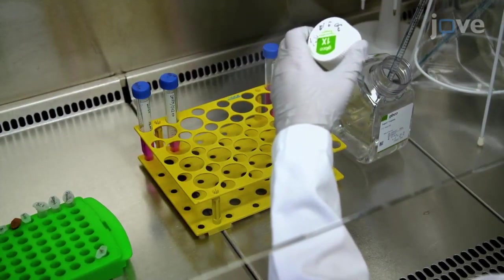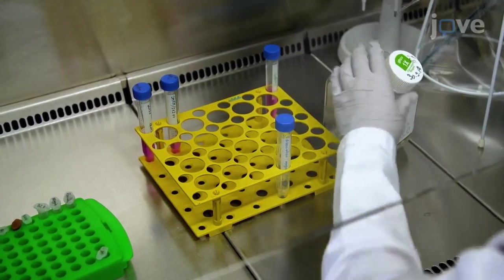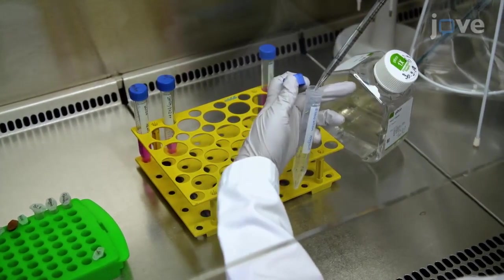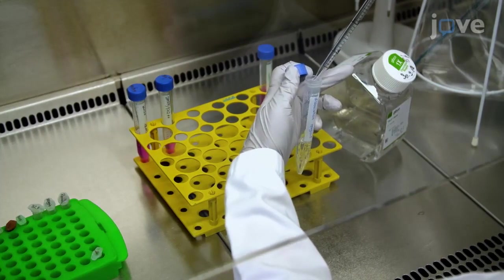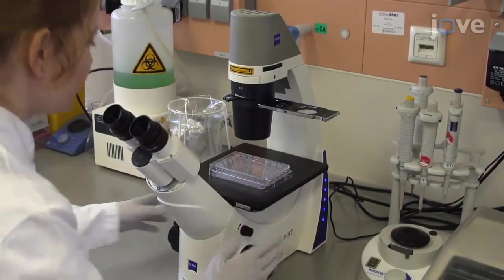Cultivate 5 wells of organoids per electroporation sample in a 48 well plate. Prepare 230 microliters of dissociation reagent with 10 micromolar Y27632 per well. Monitor the organoids under a microscope.